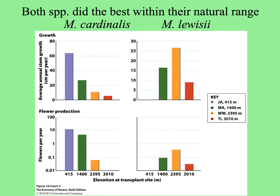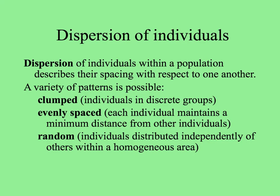Think about many species, though, that have become exotic pest plants. They are able to reproduce even better out of their natural range, often because they escape their natural enemies. So when we talk about populations, we need to talk about dispersion.